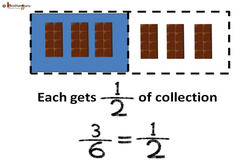But see what they did actually — they divided six chocolates into two equal shares. That is, each gets half of a collection. So half, or one by two, is equal to three by six.